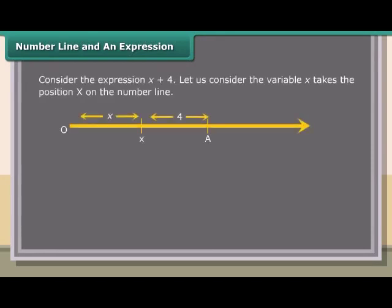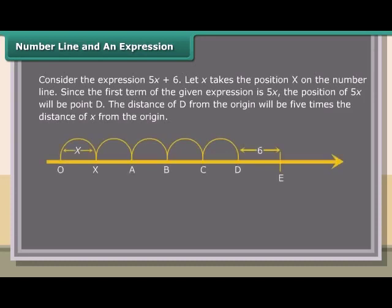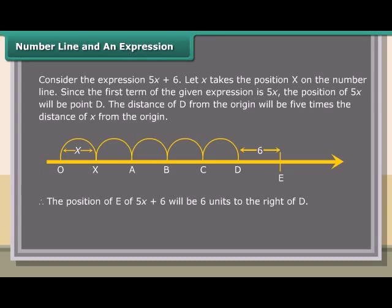Number line and an expression: Consider the expression x + 4. Let the variable x take the position x on the number line. Since the constant 4 is positive, point A takes the position 4 units to the right of x. If the expression is x − 4, the position will be to the left of x. For the expression 5x + 6, let x be on the number line; 5x is at point D, whose distance from the origin is 5 times the distance of x. Then 5x + 6 is 6 units to the right of D.